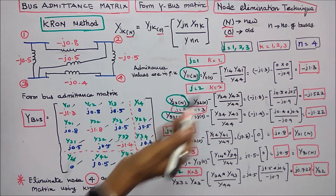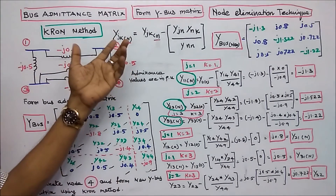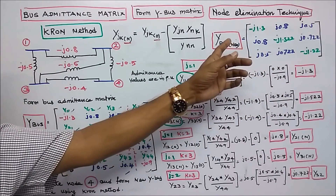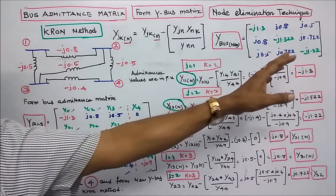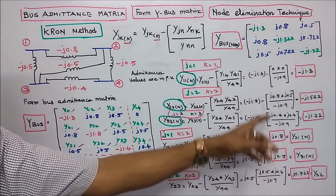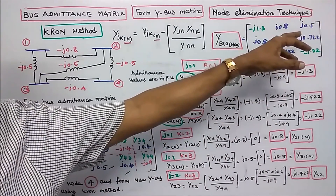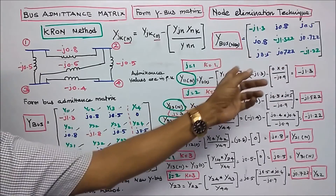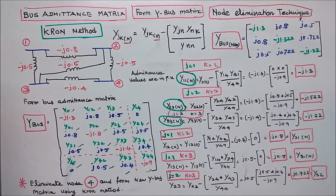Next we form the new bus admittance matrix. By using Kron's reduction method to eliminate node 4, we get a 3×3 matrix with: Y11 = minus j1.3, Y22 = minus j1.522, Y33 = minus j1.22. The off-diagonal elements are: Y12 = Y21 = plus j0.8, Y13 = Y31 = plus j0.5, Y23 = Y32 = plus j0.722. This is the new bus admittance matrix after eliminating node 4. With this I conclude my lecture, thanks for listening.